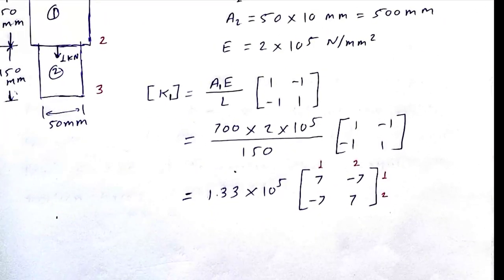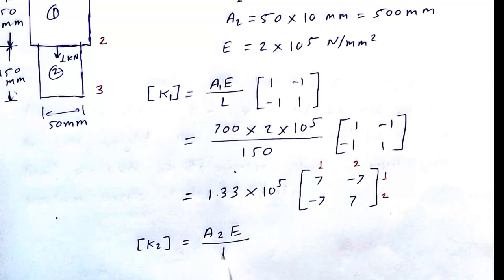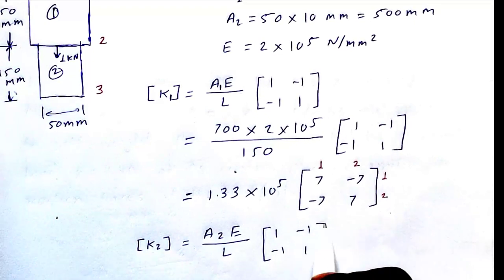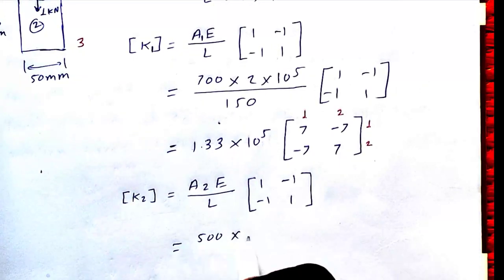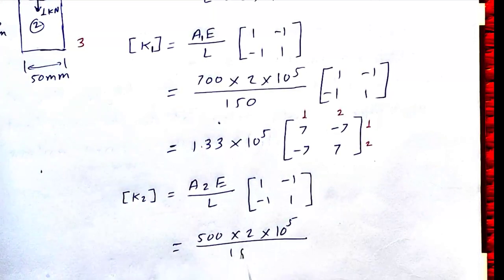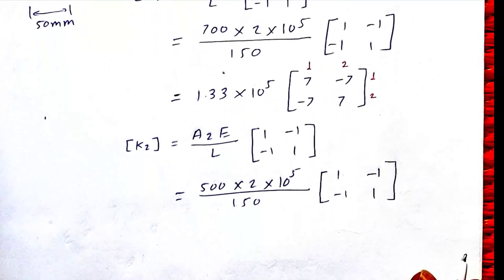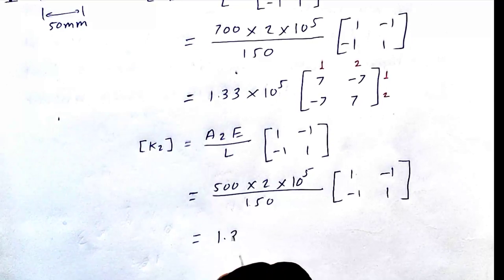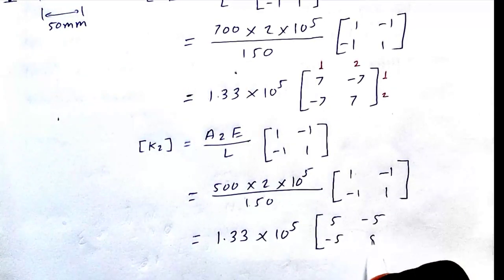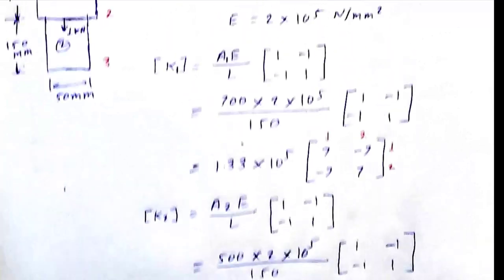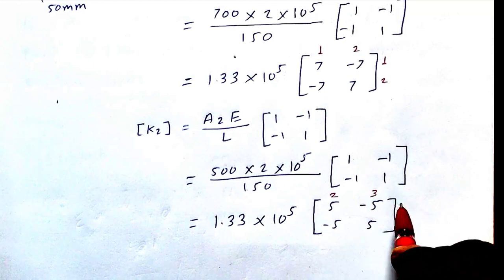Similarly, K2 = (A2 × E) / L times [1, -1; -1, 1]. Substituting A2 = 500: 500 into 2 into 10 raised to 5 divided by 150. Factoring out 5, K2 = 1.33 into 10 raised to 5 times the matrix [5, -5; -5, 5]. Connectivity for K2 is nodes 2 and 3.